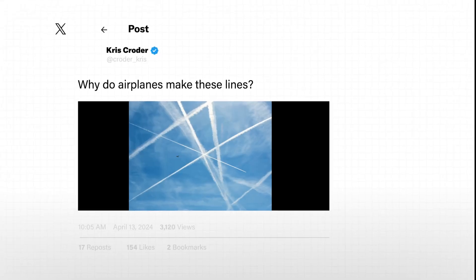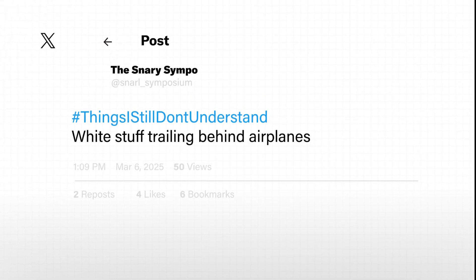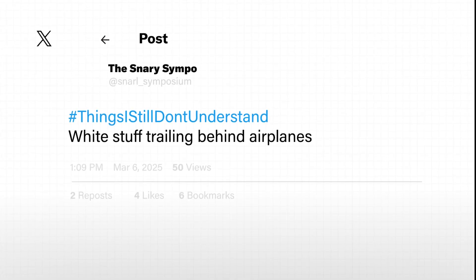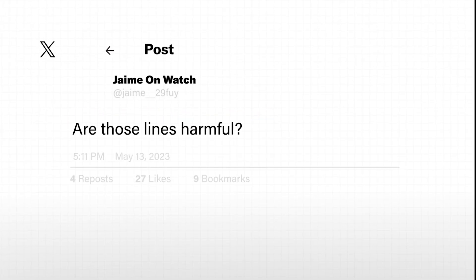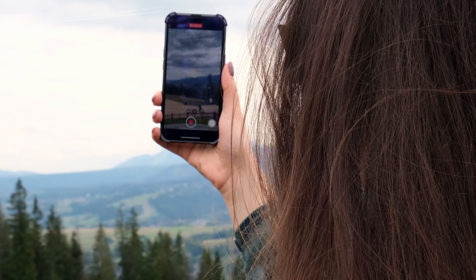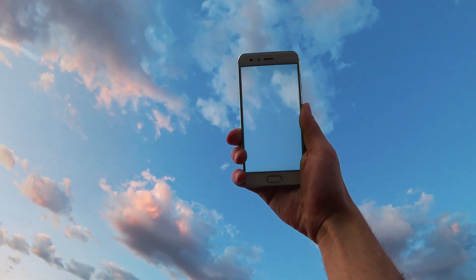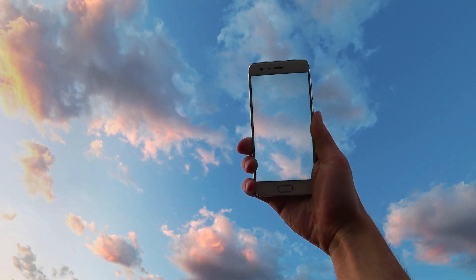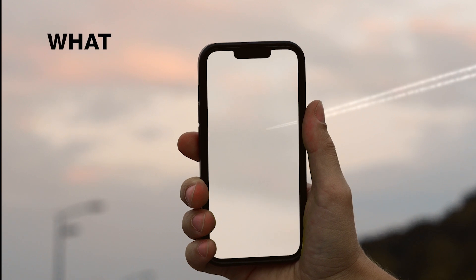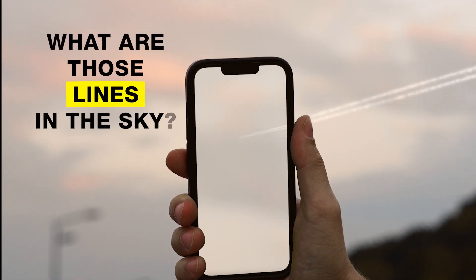Why do airplanes make these lines? Why do they show behind planes only sometimes? Are those lines harmful? Every day, millions of people look up and wonder the same thing: what are those lines in the sky?